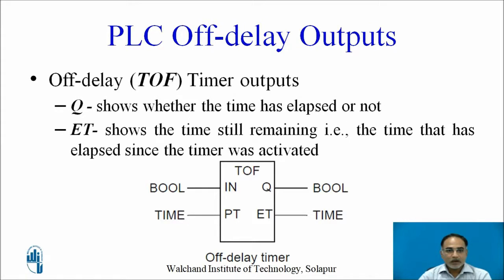Q shows the output — whether the time has elapsed or not. ET, elapsed time, shows the time that has elapsed since the timer was activated. The data type associated with Q is boolean, meaning either 0 or 1, whereas the data type associated with ET is time, meaning the value is expressed in seconds.